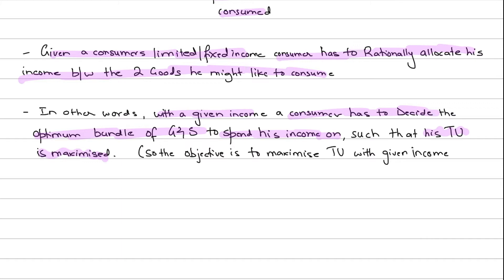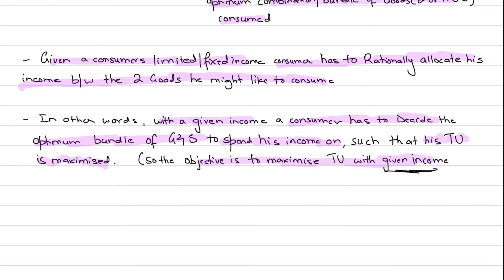To make our model simpler, we'll assume there are two goods so we can understand how this model works. The objective is to maximize total utility with a given income. With a given limited income, we have to allocate resources to buy certain amounts of good A and good B such that our total utility is maximized. This is basically the rule for rational consumer behavior.